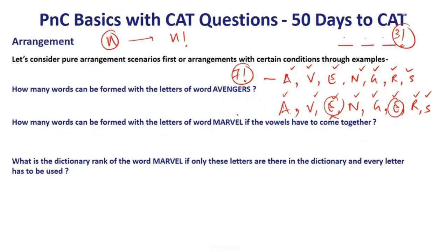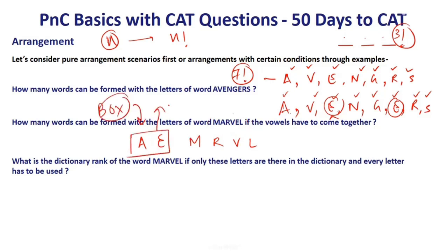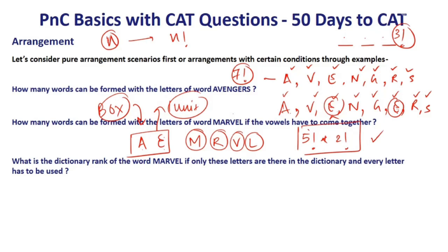How many words can be formed with the letters of MARVEL if vowels must come together? Vowels are A and E; consonants are M, R, V, L. Put the vowels in a box — they behave as 1 unit. So total units: {AE}, M, R, V, L = 5 units. These 5 units can arrange in 5 factorial ways, and within the box A and E can arrange in 2 factorial ways. Answer: 5! × 2! = 240.